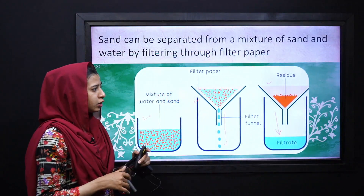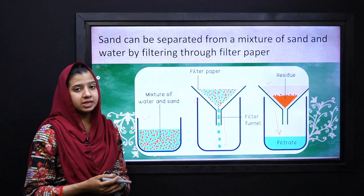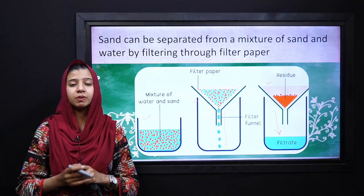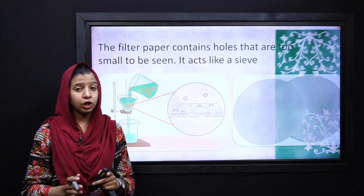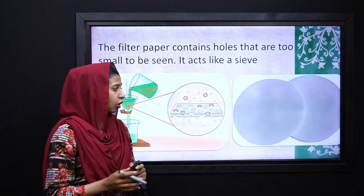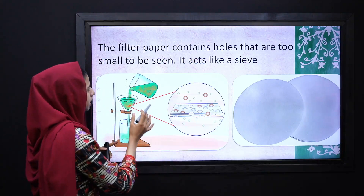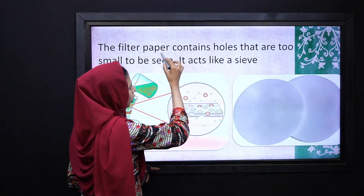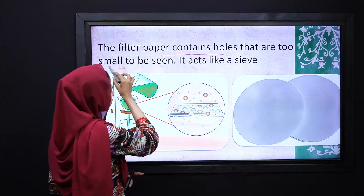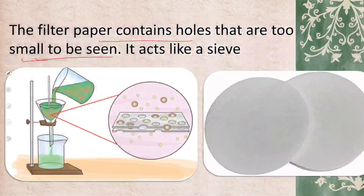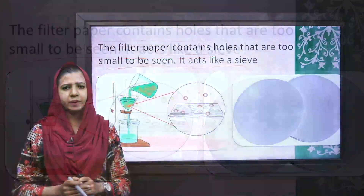Why do the solid particles remain on the filter paper? Because the filter paper contains holes that are so small they cannot be seen with the naked eye, and it acts just like a sieve.